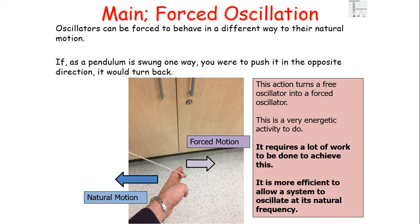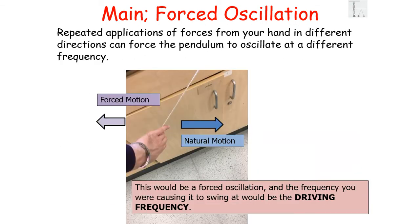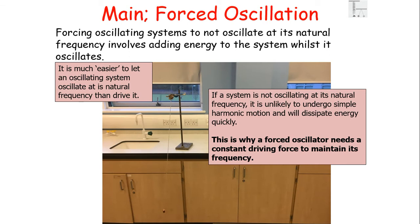If you push a pendulum in the opposite direction to its swing, it turns back — this action turns a free oscillator into a forced oscillator. It requires a lot of energy and is much less efficient than allowing a system to oscillate at its natural frequency. Repeated applications of force in different directions can force the pendulum to oscillate at a different driving frequency. Forcing oscillating systems to not oscillate at their natural frequency involves adding energy whilst they oscillate, and if not at natural frequency, a system is unlikely to undergo simple harmonic motion and will dissipate energy quickly. This is why a forced oscillator needs to maintain a constant driving force.